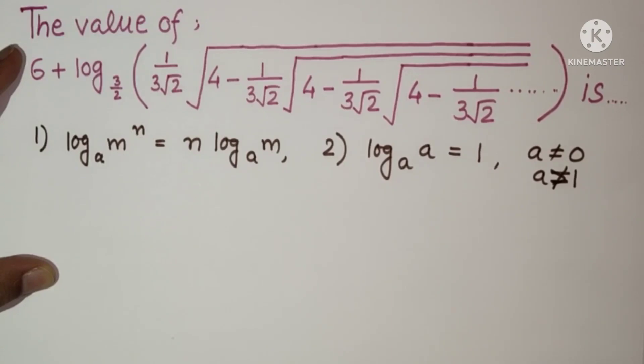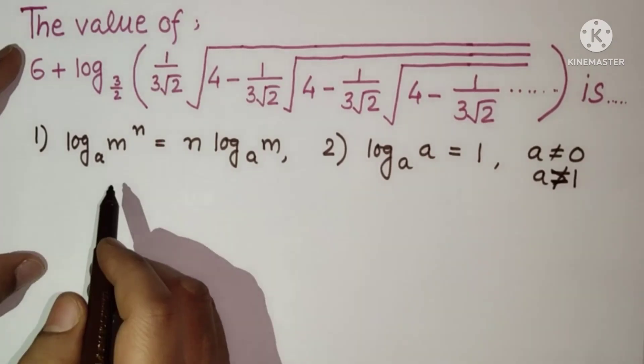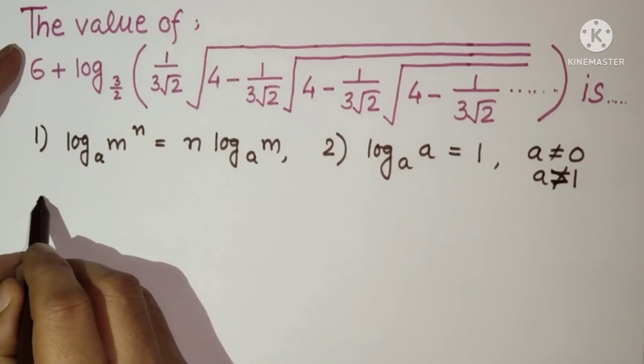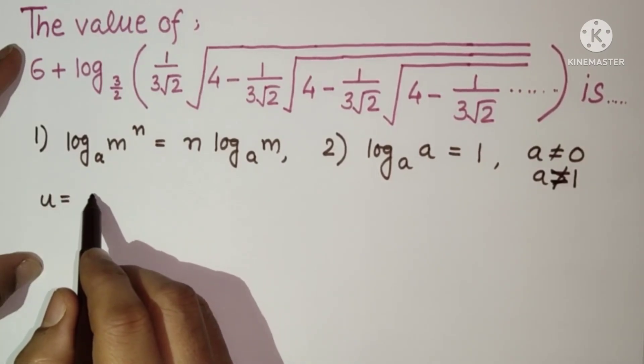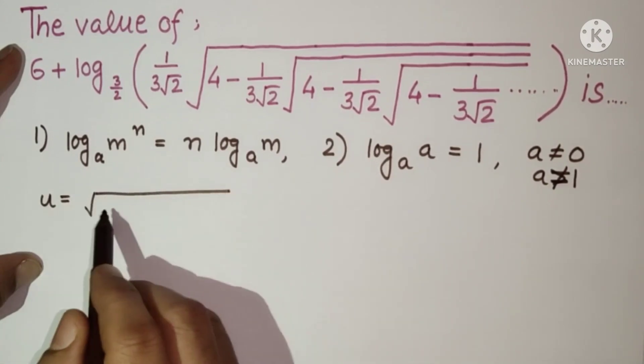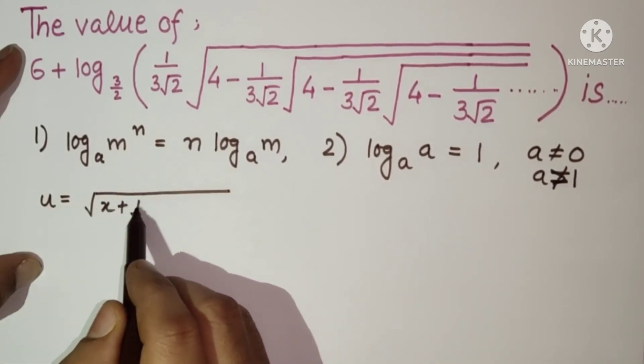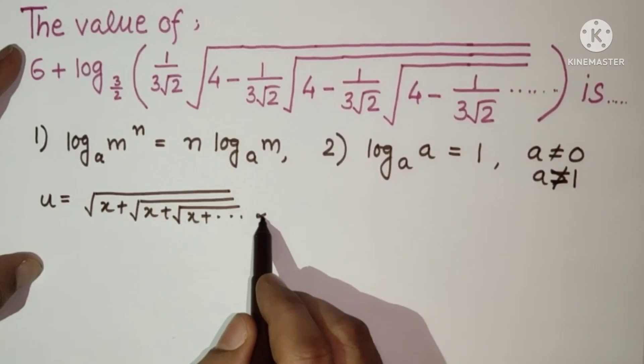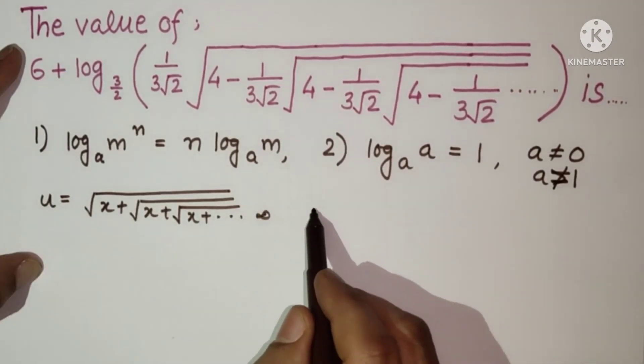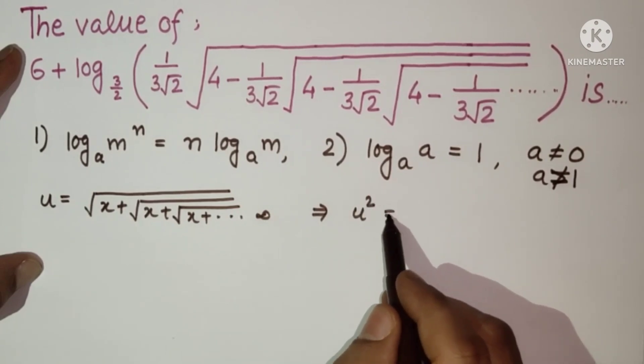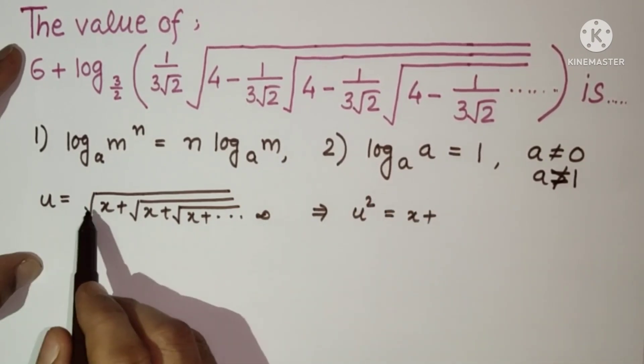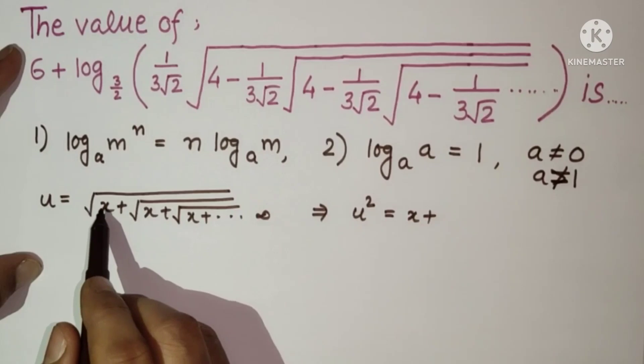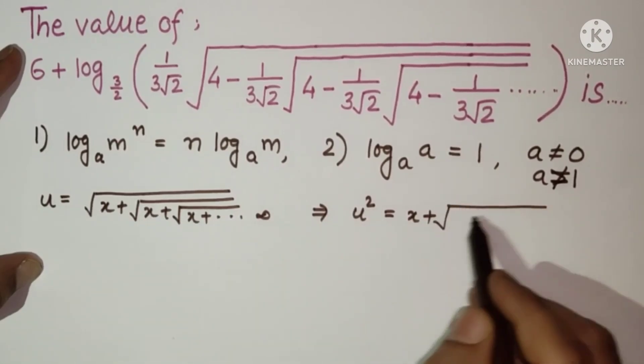Log 1 to the base 1 will be 0. And the infinite series property: suppose u is equal to under root of x plus under root of x plus under root of x plus dot dot up to infinite. If we square it we will get u square is equal to x plus u square is equal to x plus this square root sign will be disappeared.